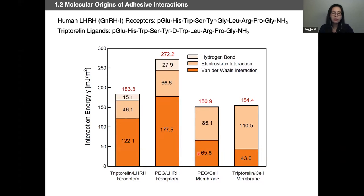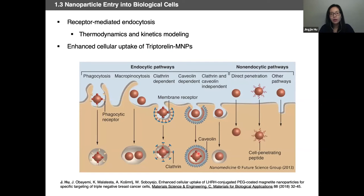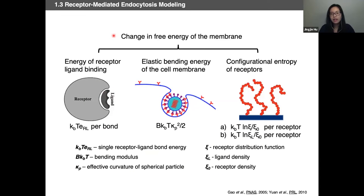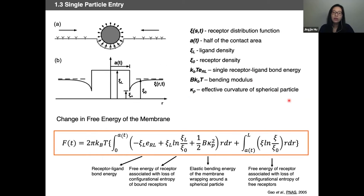We looked into the specificity between receptor and ligand interaction. This specificity can lead nanoparticle entry into biological cells through a process called receptor-mediated endocytosis. We present a combined theoretical and experimental study to understand this specific pathway for the nanoparticle to enter. During this endocytosis process, there is a change of the free energy of the cell membrane, which can be mainly divided into three parts: the receptor-ligand binding (like a lock and key system), the elevated elastic bending energy of the cell membrane to encapsulate the particle, and the loss of configurational entropy of receptors due to immobilization.